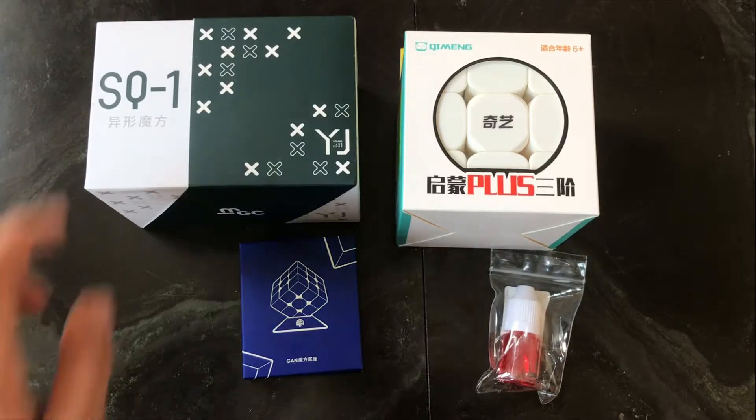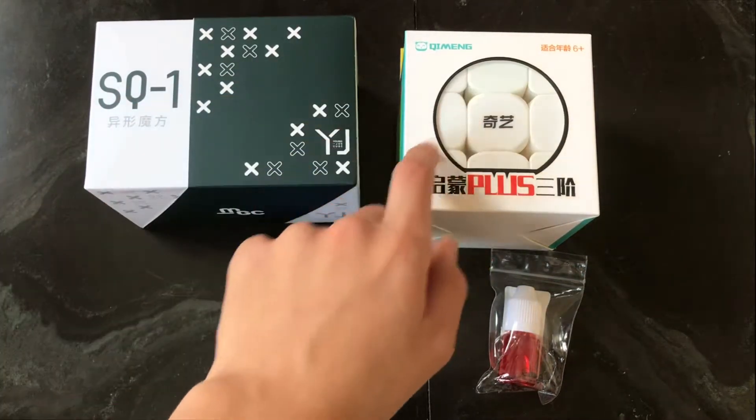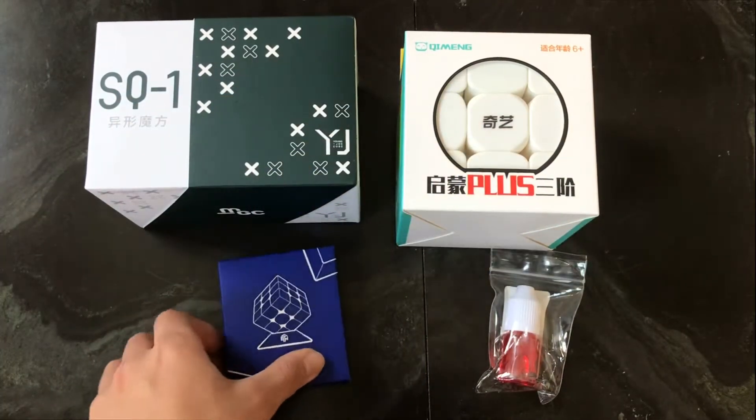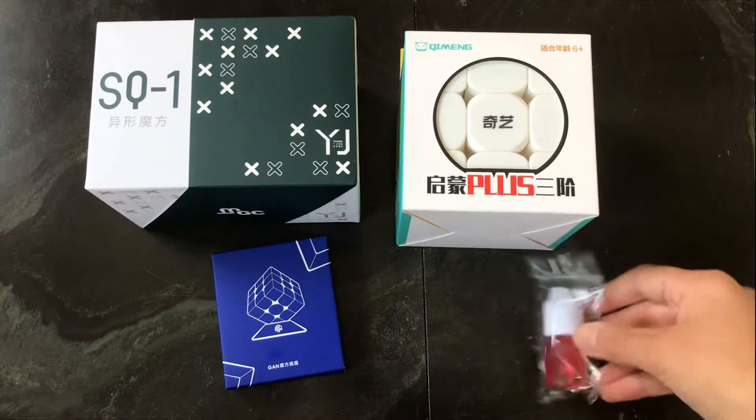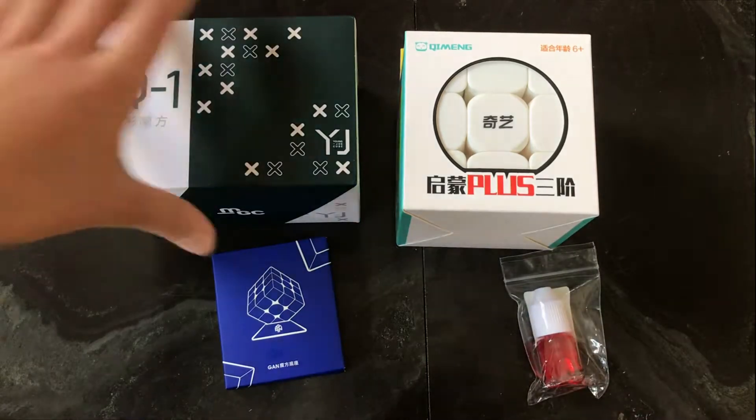In this video I'm going to be unboxing the MGC Square One, the Kui Yi Kui Men Plus, the Garn Cube Stand, and the Speedcube Comet Lube. So let's get into it. We're going to start off with the MGC Square One.